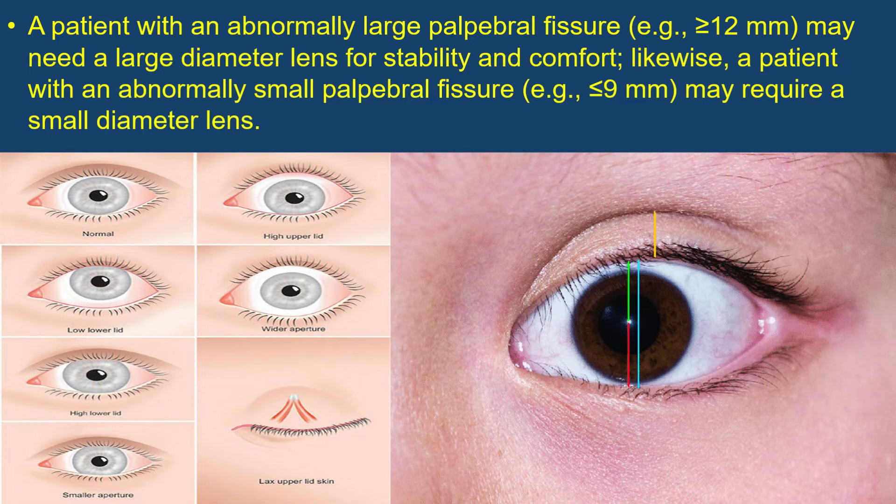Likewise, a patient with an abnormally small palpebral fissure — for example, between 9 mm and 12 mm — may require a small diameter lens.